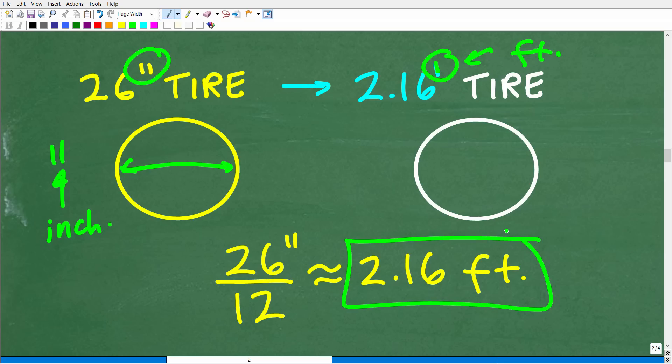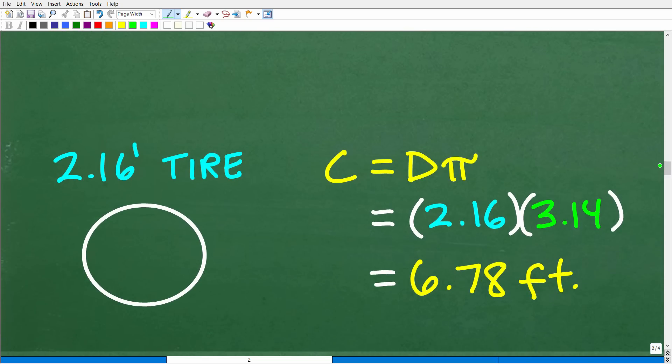So our 26-inch tire is the same thing as a 2.16-foot tire. And of course, we're going to be using this information, so we are all working with the units of measure of feet, not inches and feet, but just feet. So here is our situation. We have a 2.16-foot tire diameter. And we now want to find the circumference of that, which is effectively the distance that needs to travel to complete one revolution on this tire. So the circumference is equal to diameter times pi. The diameter is 2.16 feet, and we're going to be using 3.14 for pi. So we multiply this together. We get 6.78 feet.